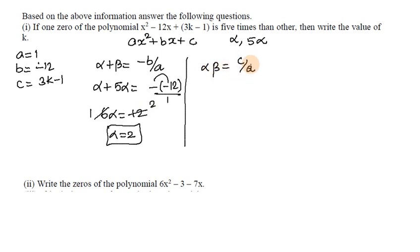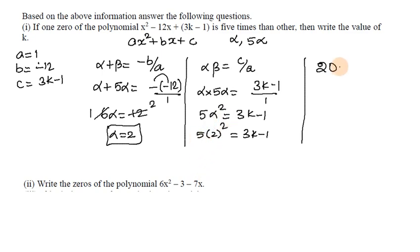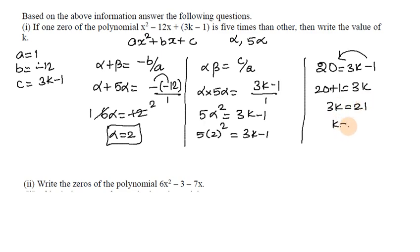Using the product of zeros formula, alpha times beta equals c by a. So alpha times 5 alpha equals (3k-1)/1. Substituting alpha=2: 5 × 4 = 3k - 1, so 20 = 3k - 1, giving 3k = 21, and k = 7.